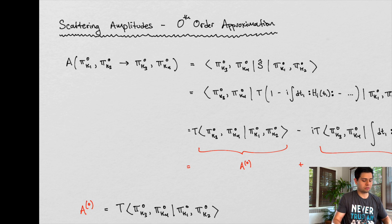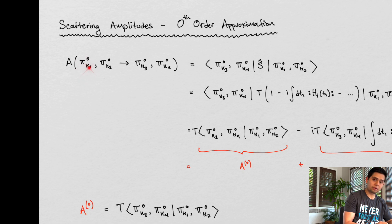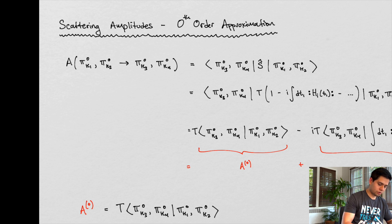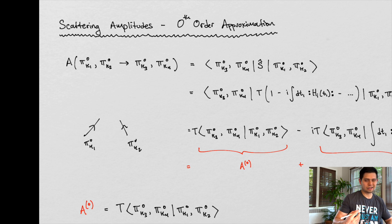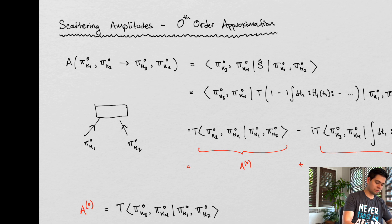Essentially what we're doing is we're starting off with two particles — we're going to call them pions. This particle is traveling at momentum k1, and this particle here is traveling at momentum k2. These zeros indicate the type of particle. Something is going to happen, and it looks like I'm drawing a Feynman diagram, but we haven't formally talked about those yet.